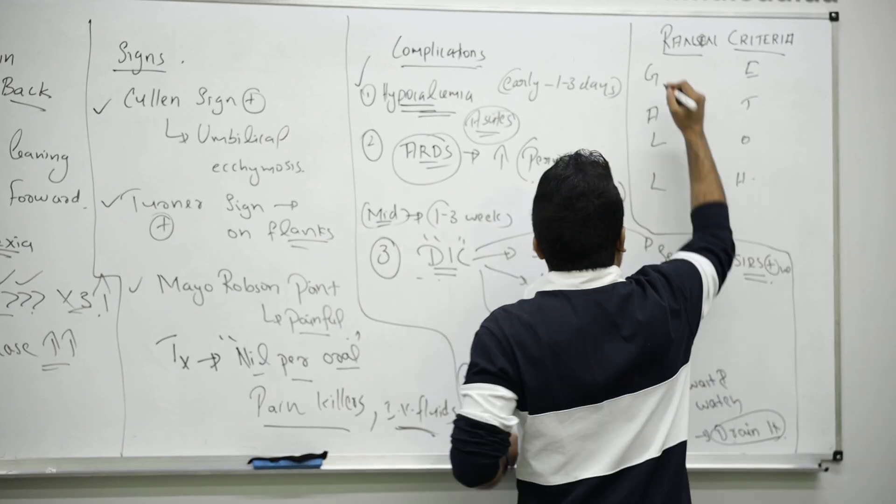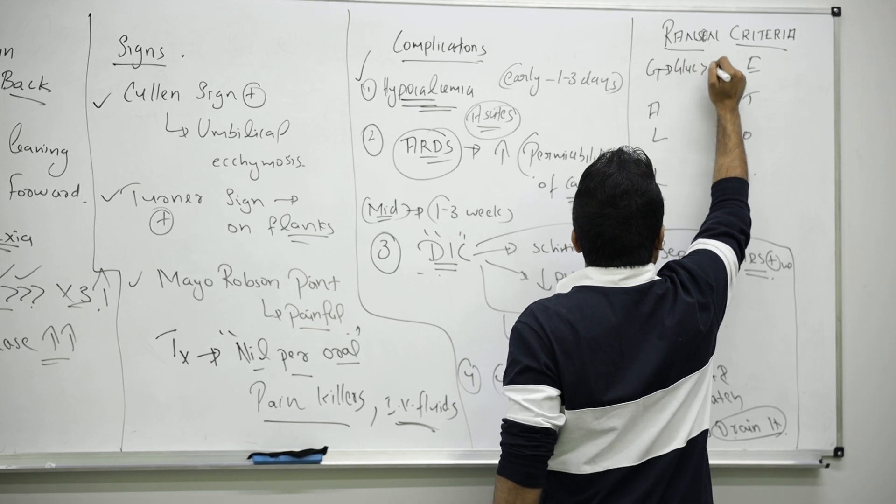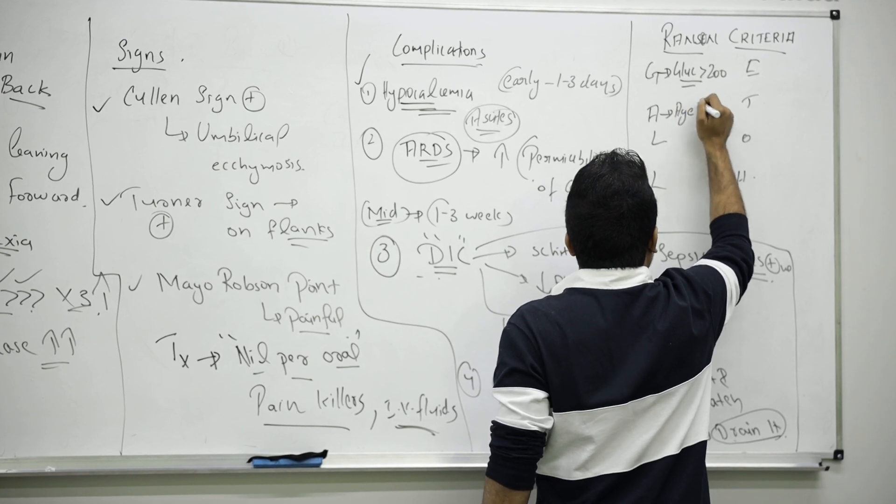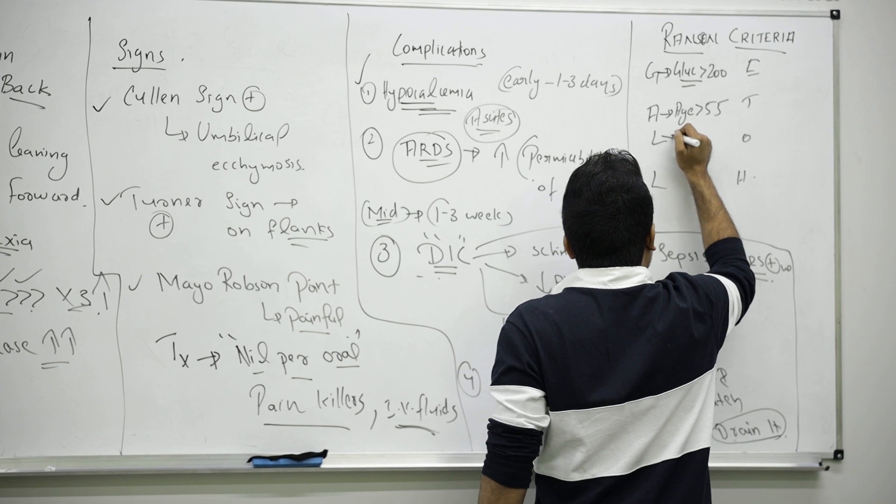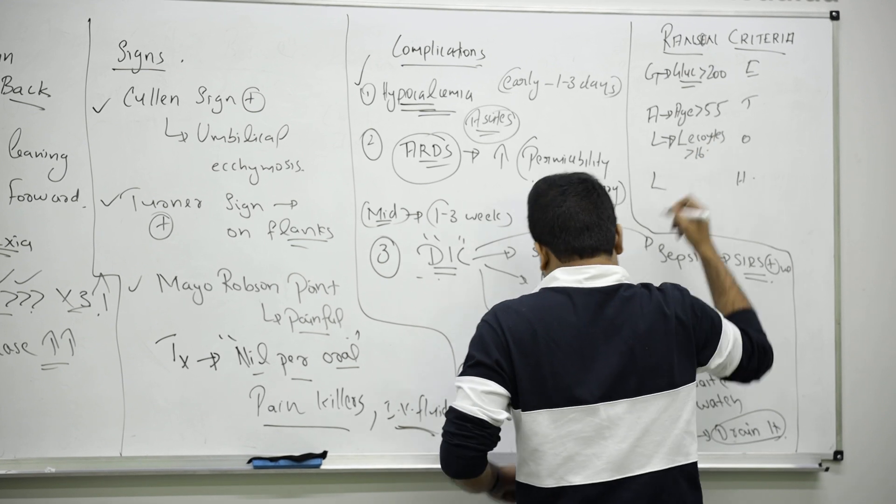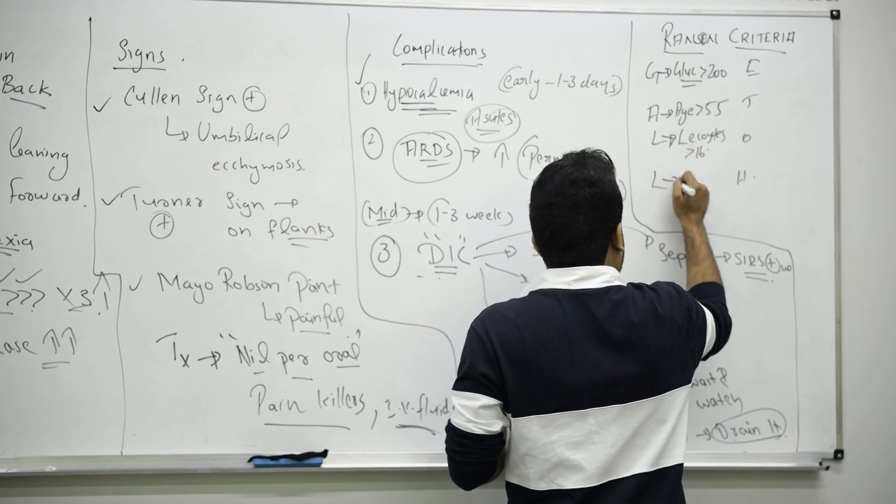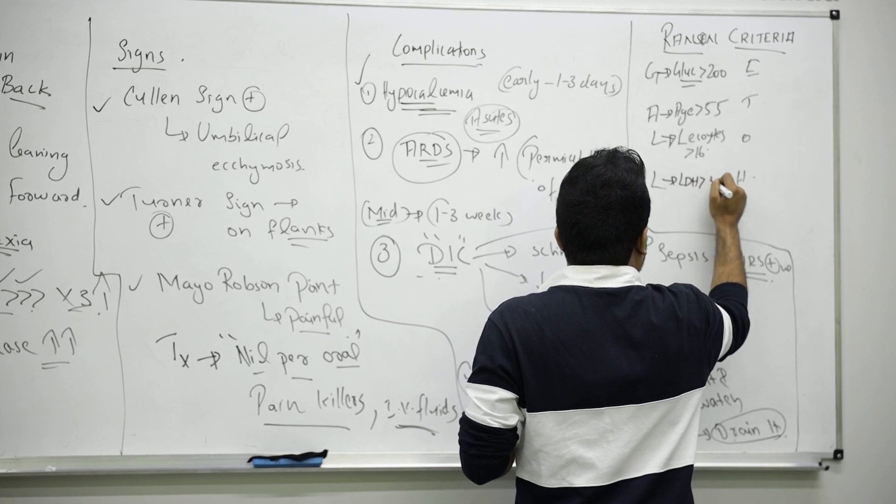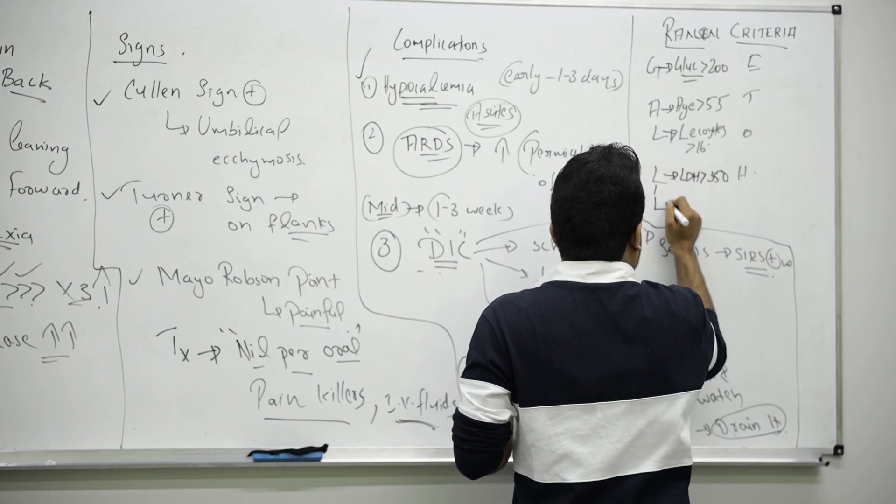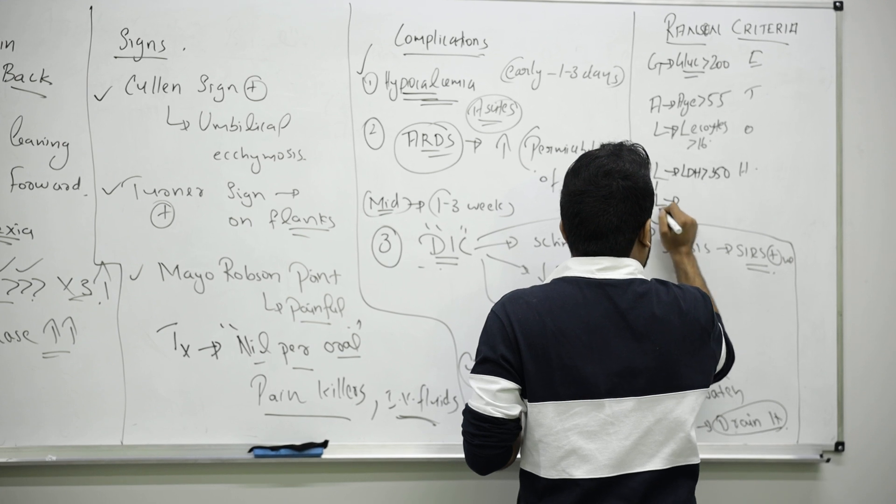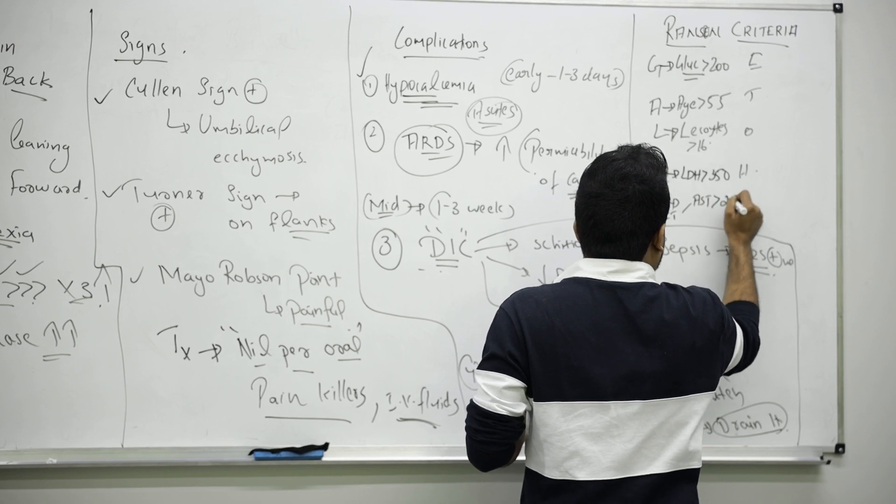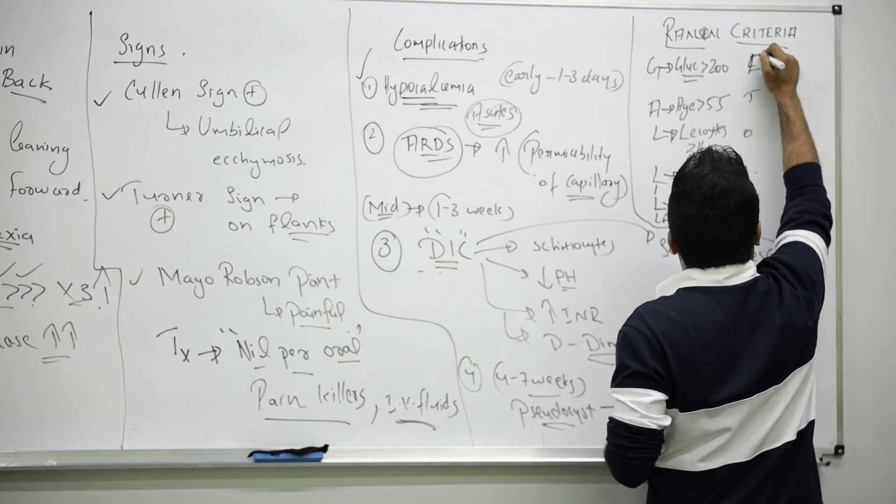Gallstone G here means glucose is more than 200 in the blood. Age is more than 55. L for WBC count more than 16, LDH more than 350. One more L we can add for liver enzymes, that is LFT, AST more than 250. E for electrolytes, here calcium less than 8.